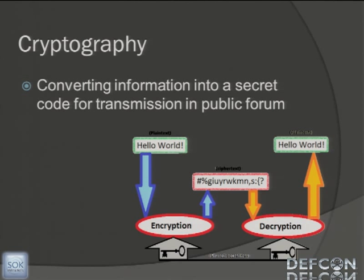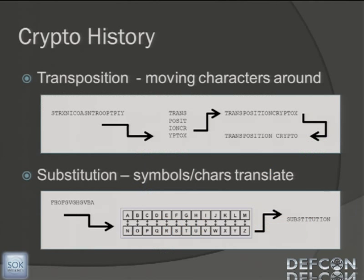With cryptography, you're taking something that everyone can see — a standard message, picture, data, whatever you want — and you're passing it through a bunch of equations and you get out garbled text that nobody knows what to do with. That's pretty much the essence of cryptography, and you do the reverse to decrypt something and come back with the standard message.